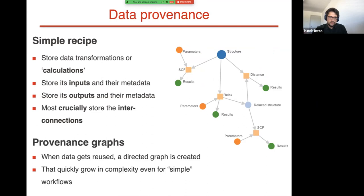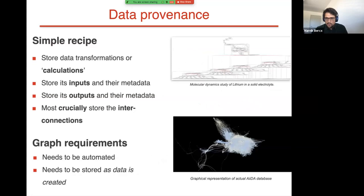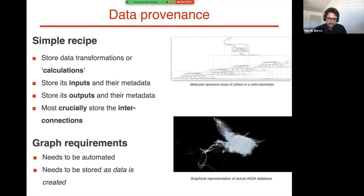Once you start using calculation results as inputs for another calculation — for example, optimizing the geometry to get a relaxed structure and then running another calculation — you build quite complex provenance graphs, or directed acyclic graphs (DAGs). For more extensive properties, such as a molecular dynamics study of lithium in a solid electrolyte, these provenance graphs become very complex. We want this data stored automatically as it is created. The image on the title slide actually represents a database of one of our collaborators with over a million nodes, where each line is one of these connections in the provenance graph.